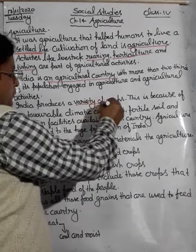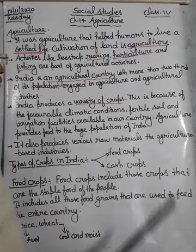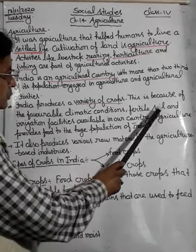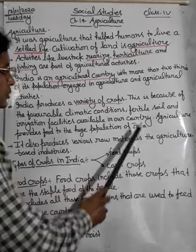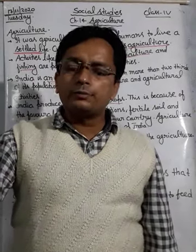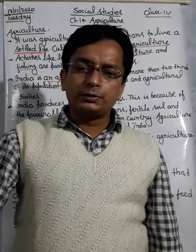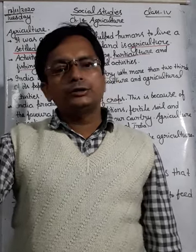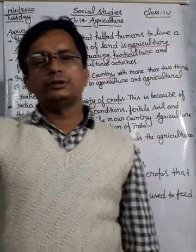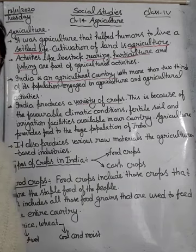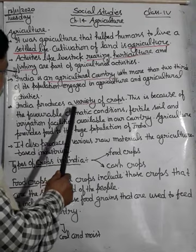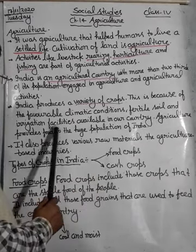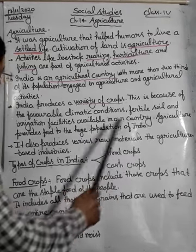India produces a variety of crops. This is possible because of the favorable climatic conditions, fertile soil, and irrigation facilities available in our country. Different types of crops need different climatic conditions and land quality, and India's land has all these facilities that help in producing a variety of crops.